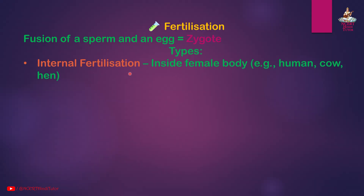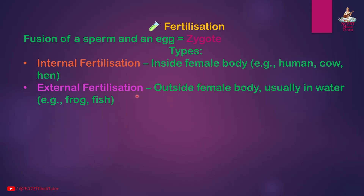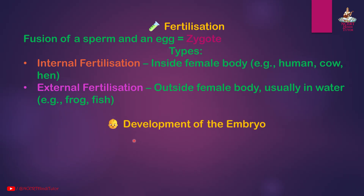Internal fertilization occurs inside the female body — examples: humans, cow, hen. External fertilization occurs outside the female body, usually in water — examples: frog, fish.